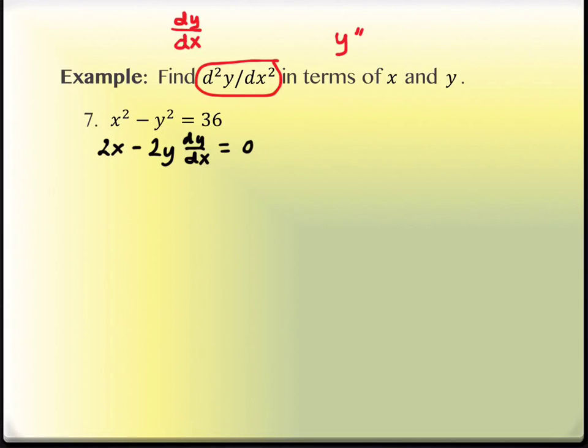So we want to solve this for dy dx. It is going to be extremely helpful for us to solve that before we start taking a second derivative of something. So we're going to move the 2x to the other side. So I have negative 2y dy dx equals negative 2x. And then I will divide by negative 2y. So what is dy dx here? Yeah, dy dx is x over y.